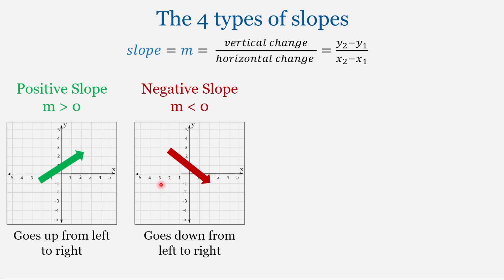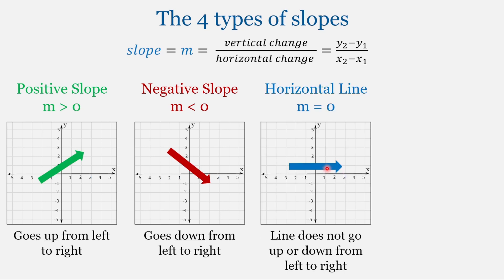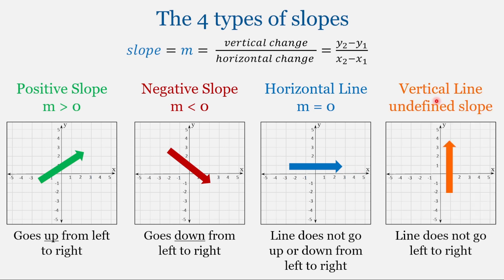Now let's look at the two other types of slopes. We have a line that goes up, a line that goes down — but how about a line that stays flat as we move from left to right? We call those horizontal lines. Horizontal lines have a slope of zero. And then there are vertical lines — they do not go left to right, they just go straight up and down. Vertical lines have an undefined slope.